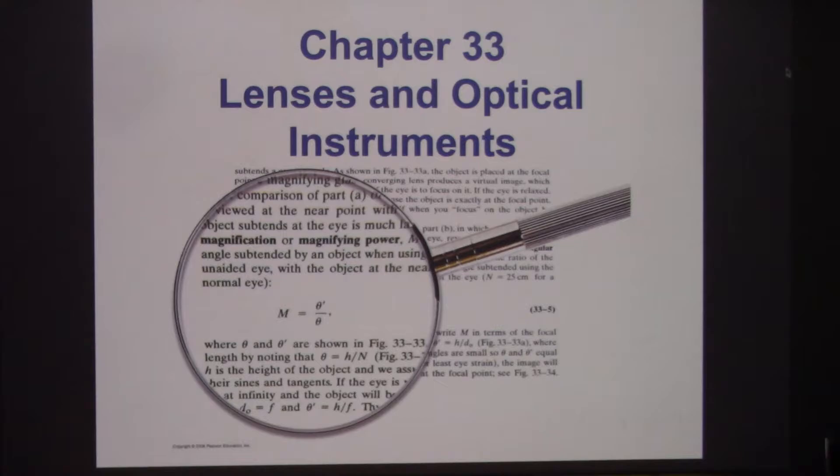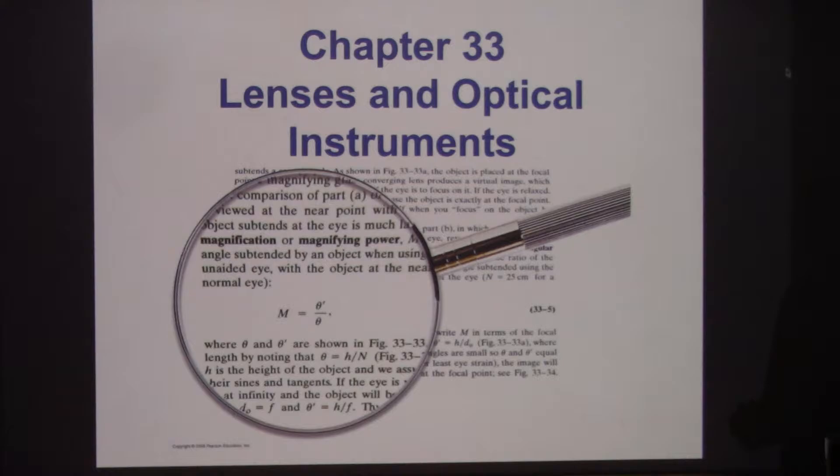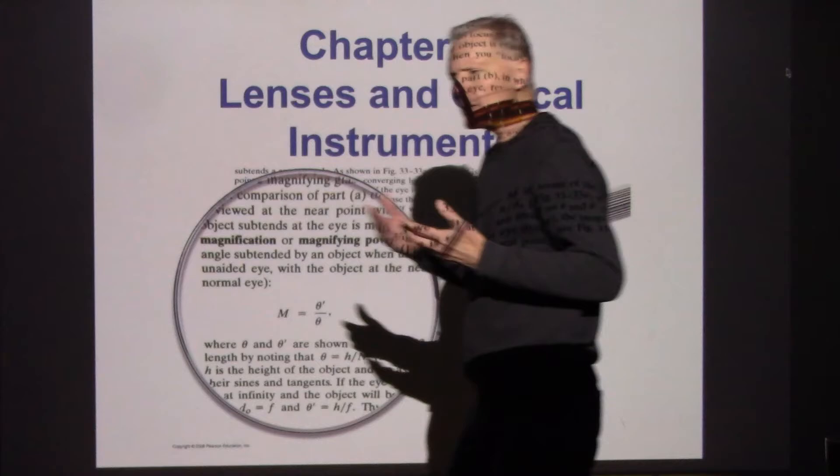Good morning. We are moving on to chapter 33. We just finished up our previous class where we had looked at chapter 32. We had introduced light, geometric properties of light, and we had used those to take a look at reflection, mirrors, refraction, and single refractive surfaces. Now we're ready to move on and look at lenses.